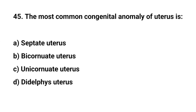Question No. 45. The most common congenital anomaly of uterus is? Right answer is A: Septate uterus.